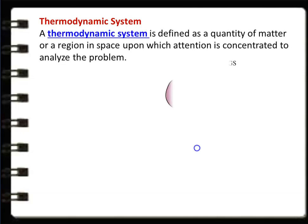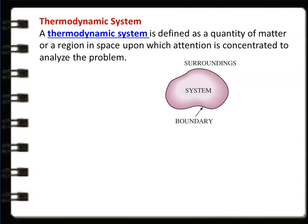Thermodynamic system is defined as a quantity of matter or a region in space upon which attention is concentrated to analyze the problem. In the previous lecture, I showed many home appliances and engineering devices like turbines, compressors, and refrigerators — everything is considered as a thermodynamic system. A system is defined as a quantity of matter or region of space. Whatever is inside is called the system, and we concentrate only on the system to study the change in properties.